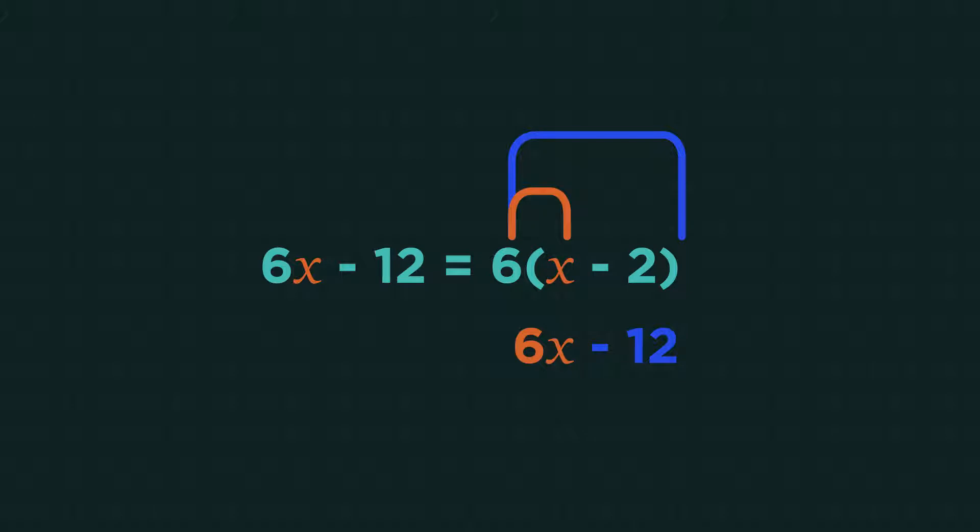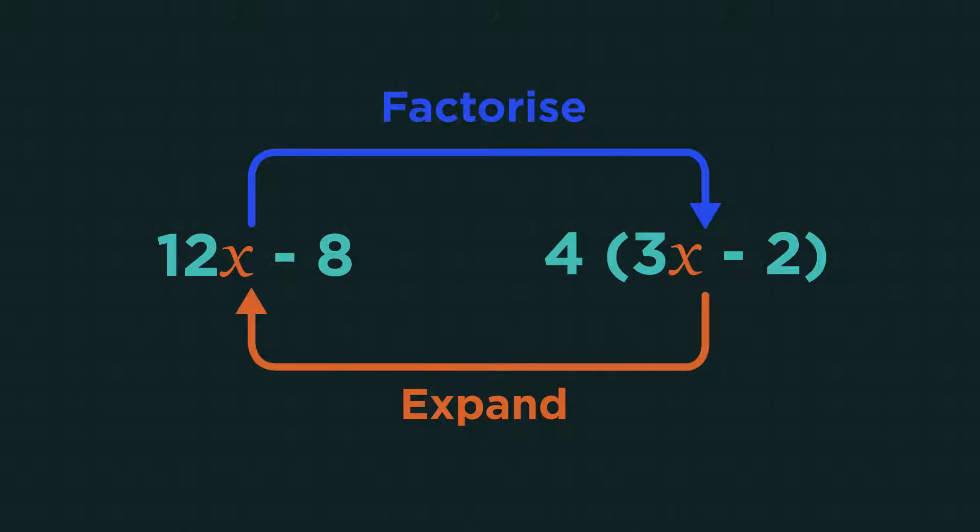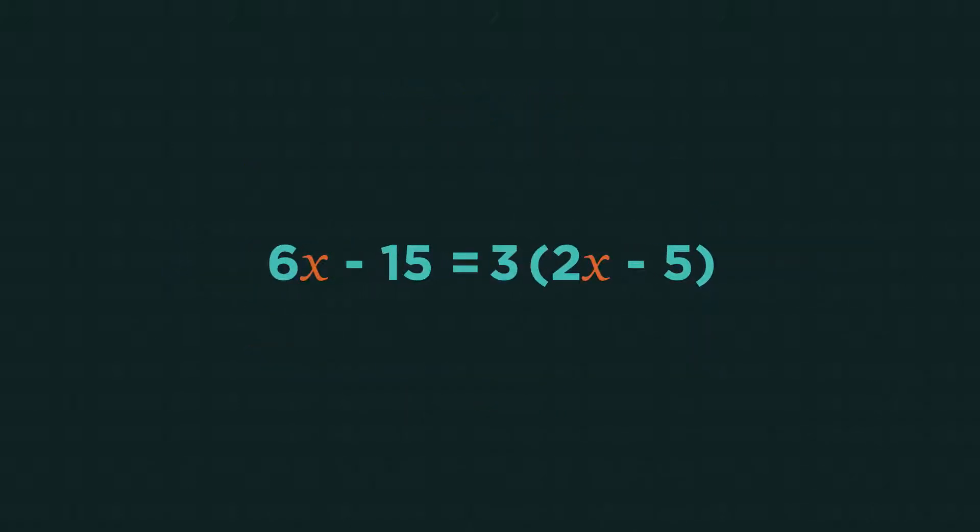Factorizing is just the opposite of expanding brackets. Expanding gets rid of the brackets, factorizing puts into brackets. To factorize we look for the highest common factor of every part of the expression, which was 3 in this example.